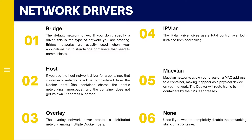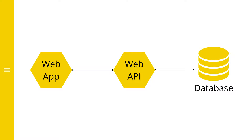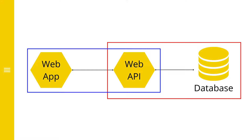Just assume that we have a solution with one web application and one web API. The web application should not communicate directly to the database — we need the communication to happen through the web API. The web API is the only application that needs direct access to the database. So for this solution we should create two networks — let's name them frontend and backend. In the frontend network we can add the web application and web API so they can communicate with each other. In the backend network we can add the web API and the database. The web API container has both frontend and backend networks. If we establish the network connectivity like this, the web application Docker container cannot access the database Docker container because they don't have any network connectivity.